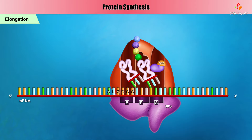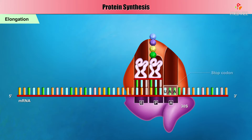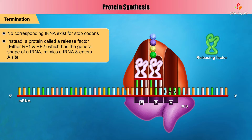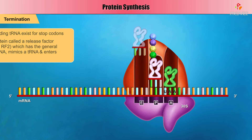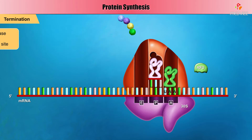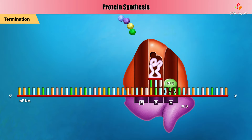Eventually, the ribosome arrives at the end of the coding region, marked by one of three stop codons. This stage of translation is called termination. No corresponding tRNAs exist for stop codons. Instead, a protein called a release factor — either RF1 or RF2 — which has the general shape of a tRNA, mimics a tRNA and enters the A site. The release factor activates the peptidyl transferase function of the ribosome, which cuts the bond tethering the completed peptide to the tRNA in the P site. Another factor, called RF3, then triggers RF1 or RF2 to depart the ribosome.